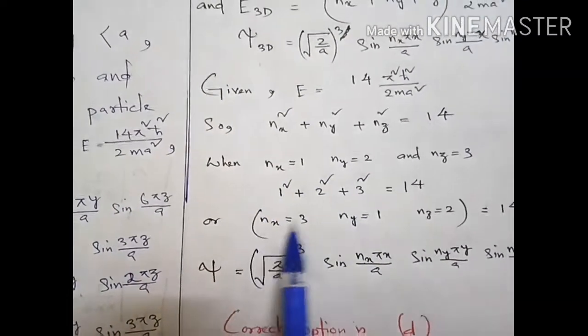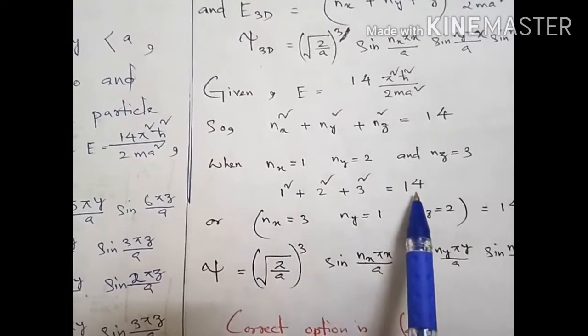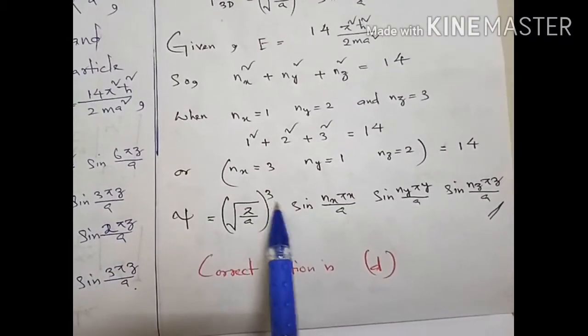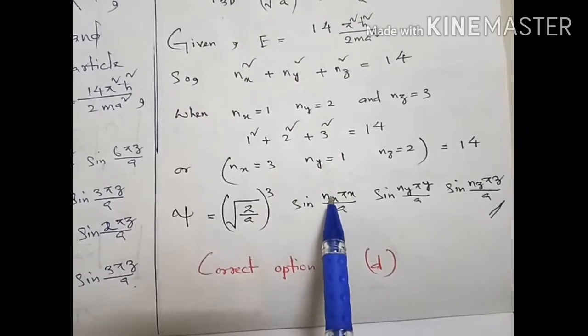So our wave function is √(2/a³) sin, and in place of nx how much it will be?